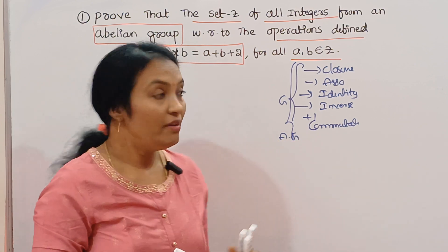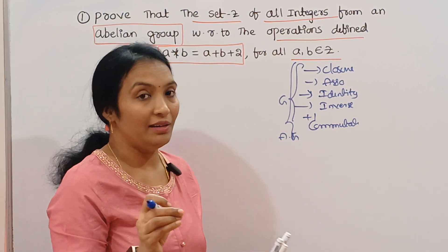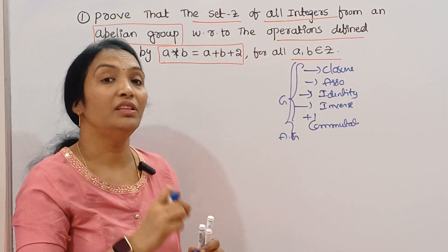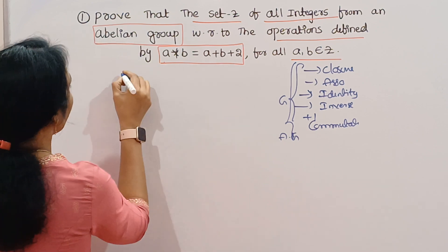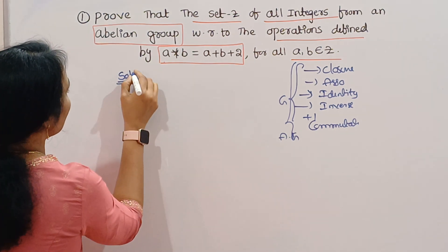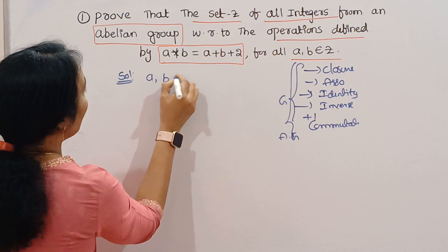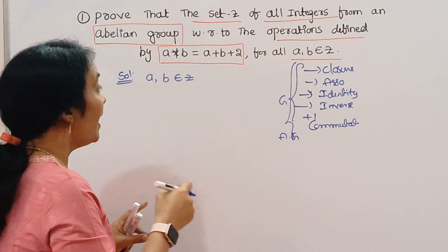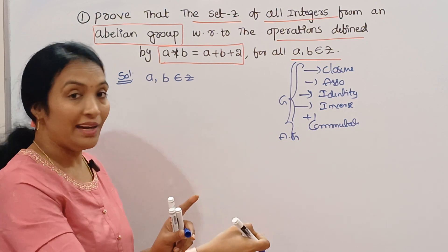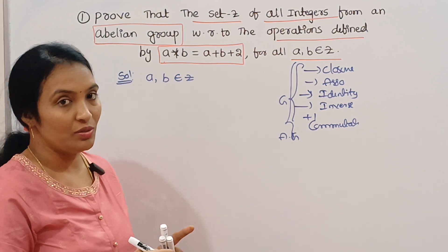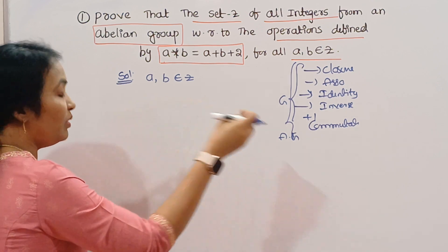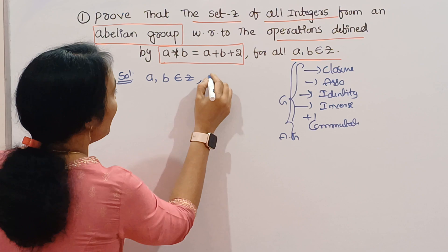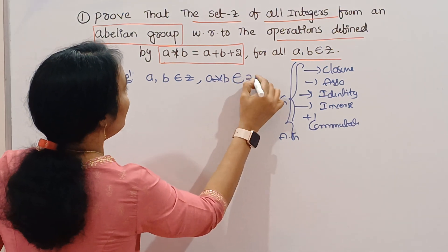Here we will check. First, group check. Now check whether it is closure or not. For both A, B belonging to Z, our closure property rule is: under addition, A plus B belongs to Z; under multiplication, A times B belongs to Z. That is why closure holds. If A, B belongs to Z, then A star B belongs to Z.